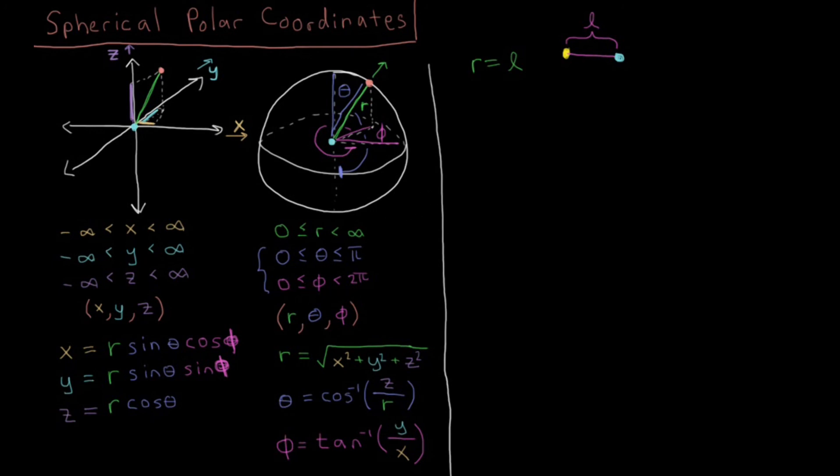So our wave function, which, in principle, would be a psi of r, theta, and phi, if we were describing the center of mass position of this diatomic molecule, it reduces to just a wave function which depends on theta and phi. So it can rotate in this azimuthal plane here, and it can also rotate for any degree in this polar axis as well.